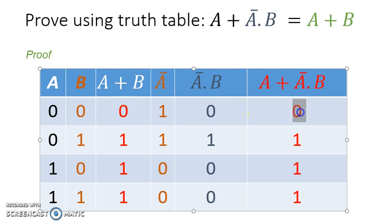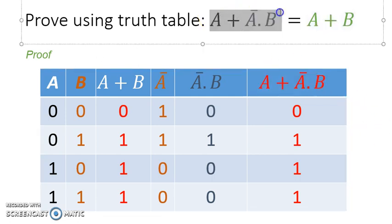If we take a look at A or not AB, this column, and A or B, this column right here, for every possible input combinations of A and B, each row matches on the truth table. That basically means A or B is the same as A or not AB. So we've proven that A or not AB is the same as A or B. This is how you use a truth table to prove something, a Boolean expression.